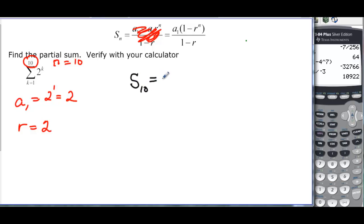s sub 10 is going to be equal to a sub 1, which is 2, times 1 minus my r, which is 2, but to the 10th. And then we're going to divide that by 1 minus my rate, which is 2. So on the bottom, 1 minus 2 is going to be negative 1. And I'm going to go to my calculator because I'm not sure what 2 to the 10th is.